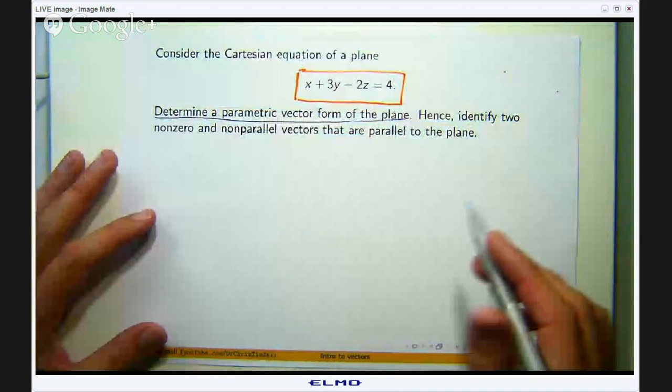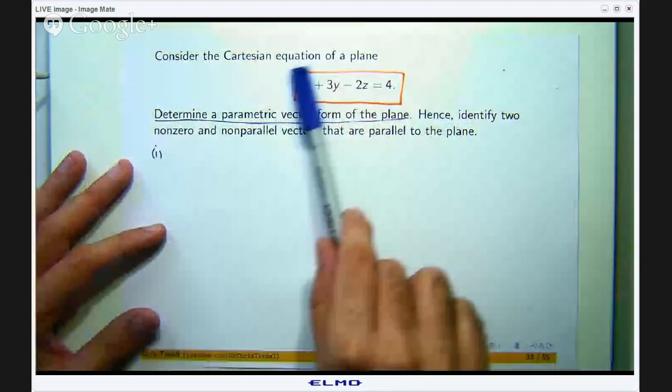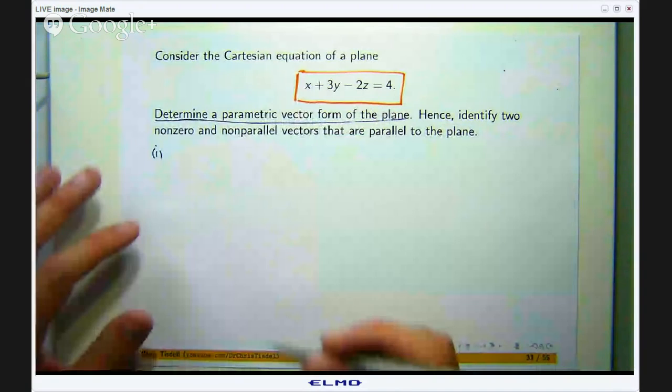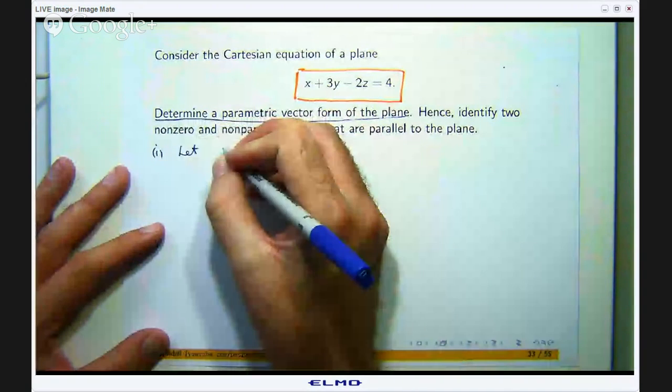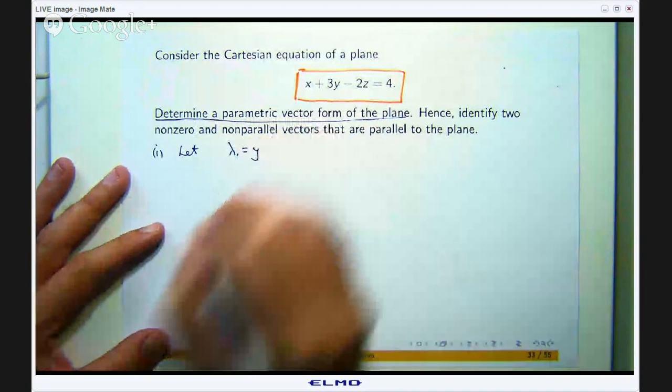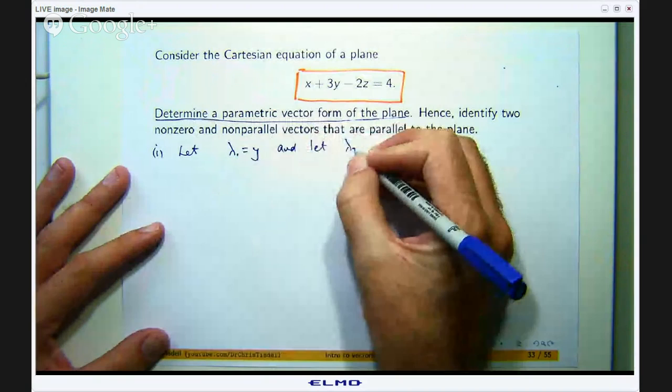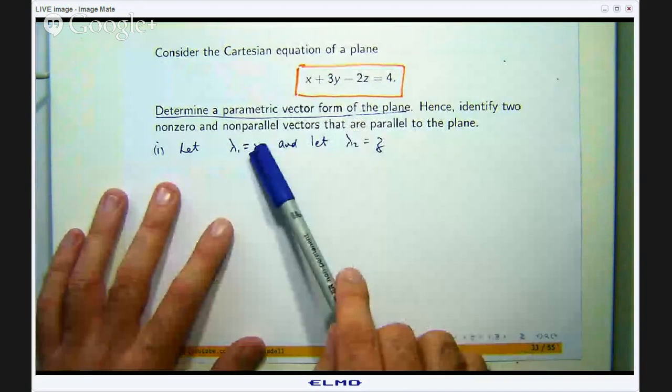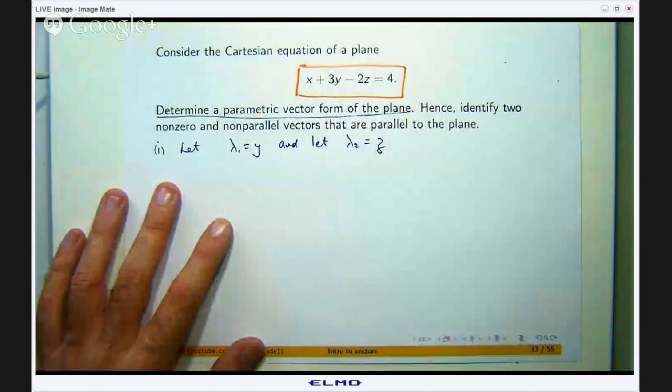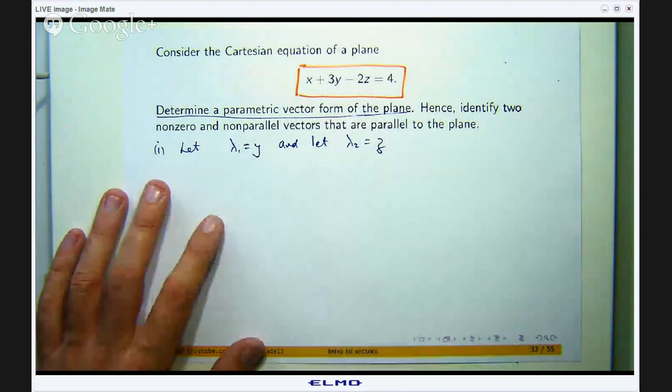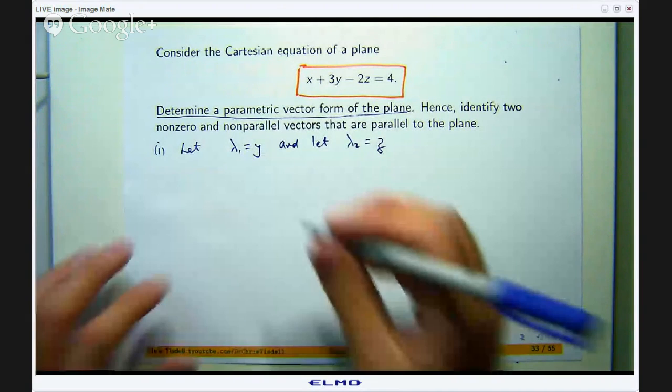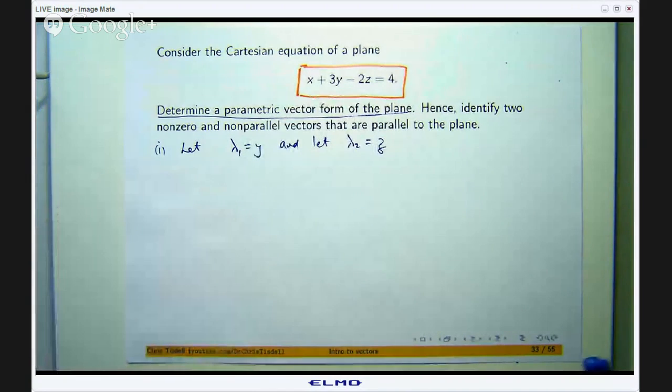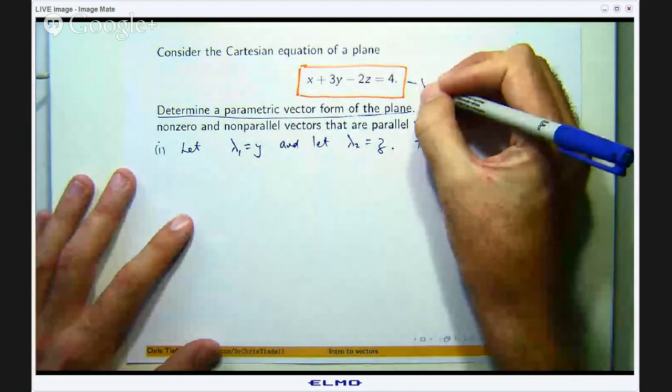Well, we want to introduce some parameters. The λ1s and the λ2s here are parameters. They are just real numbers or they vary over the real numbers and they are just known as parameters. So let me show you how to do this problem. So I am going to let λ1 equal y and I am going to let λ2 equal z. So let us call this star.